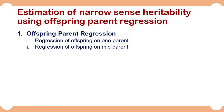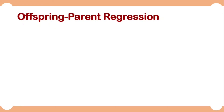As I have already explained in my first video, offspring-parent regression can be further divided into two types: regression of offspring on one parent, and regression of offspring on midparent. If you have values on only one parent and its offspring, you will use regression of offspring on one parent. If you have values on both parents and their offspring, you would use regression of offspring on midparent. Midparent means the average value of the two parents.